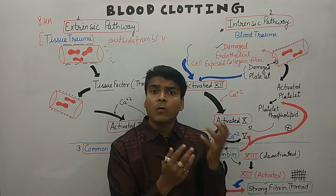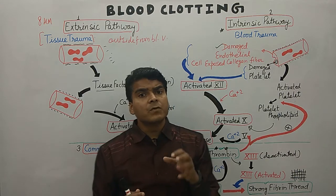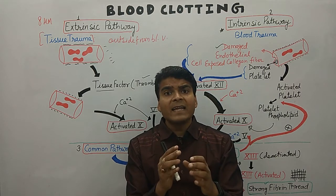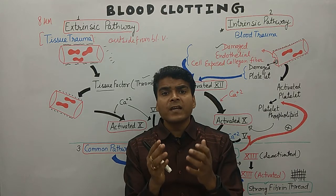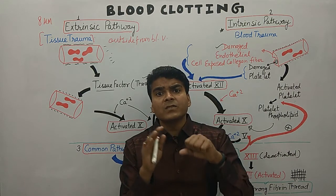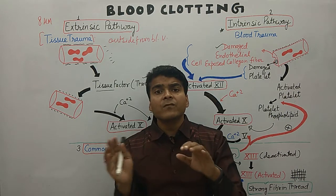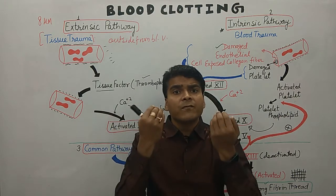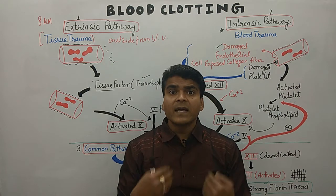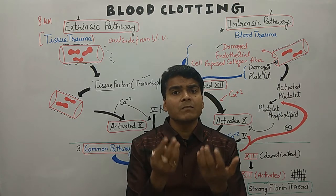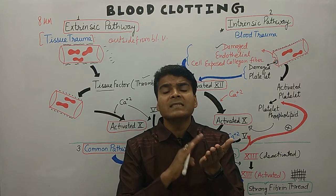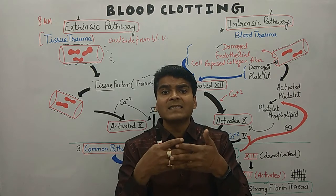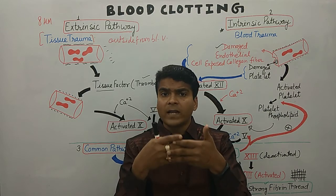Now just look at how the body completes the whole process of blood clotting. Whenever there is an injury, if the injury is on the external side, we generally use cloth or cotton to stop the bleeding. Similarly, if the injury is within our blood vessels inside the body, the body also tries to stop it by making a plug or network, which is known as a clot.